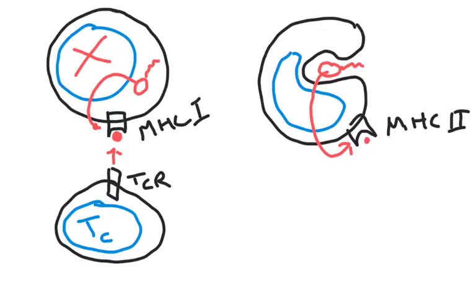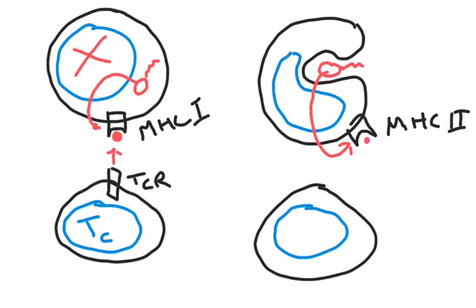Antigens on MHC-2 trigger a different response. These are recognized by T helper cells, another type of lymphocyte. These cells also have T cell receptors, which can recognize specific antigens. But when they recognize an antigen, instead of killing the cell, which isn't infected, and therefore doesn't need to be killed,